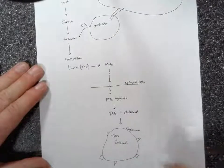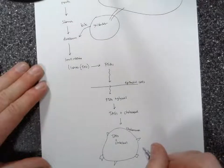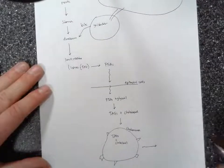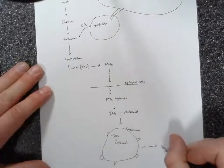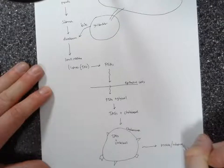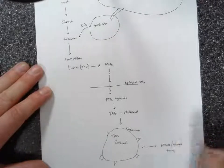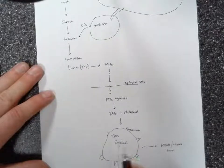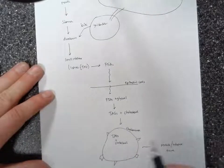And these chylomicrons are going to pass through the lymphatic system into the bloodstream and head mainly to muscle and adipose tissue, where the triacylglycerols and cholesterol are going to be drawn out.